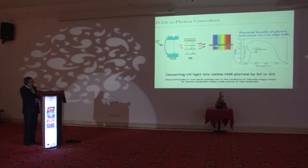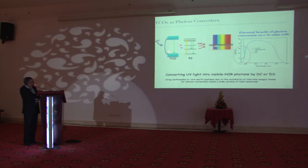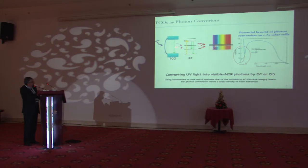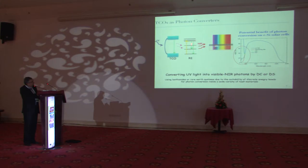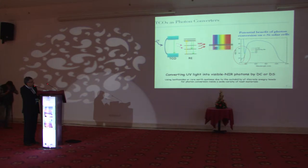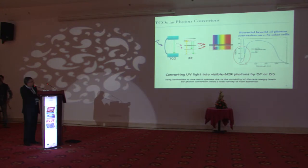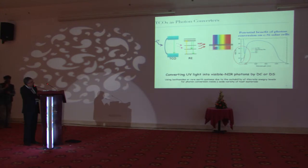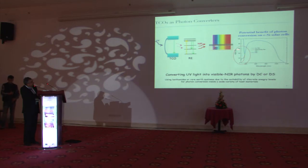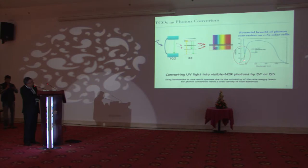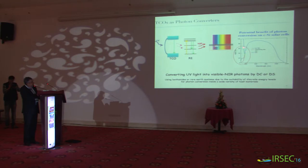If we combine the properties of the TCO — which is able to absorb UV light and transfer this energy to the rare earth — then through the transitions at the different energy levels of the lanthanides, this can emit visible or infrared light. You can see here the expected gain with and without downshifting, and this is something we are looking for.